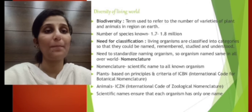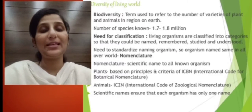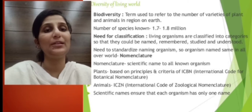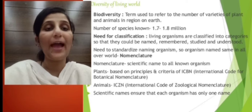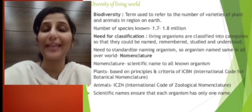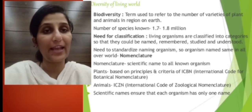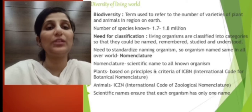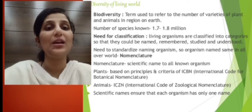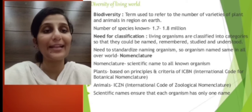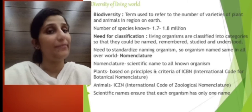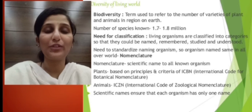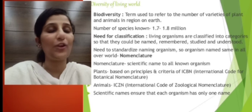Next, we will learn about biodiversity. 'Bio' stands for life and 'diversity' stands for the diverse forms of life found on the surface of the earth. We have numerous life forms on the surface of the earth, and the number ranges to about 1.7 to 1.8 million. It is not possible to study each and every organism's characters — it is a mission impossible. So this calls for the need for classification, meaning living organisms have to be grouped into categories so that they can be easily named, remembered, studied, and understood.